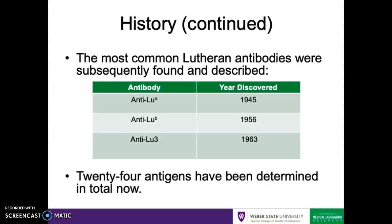Not all of the Lutheran antibodies were discovered all at once. Anti-Lutheran A was discovered in 1945, but it took a couple of years before they discovered anti-Lutheran B, which was evidence for the A antigen's antithetical partner. After this, they learned about the Lutheran A and B negative phenotype, and these individuals would occasionally make an anti-Lutheran 3 antibody as well, discovered in 1963. Subsequently, they also discovered about 22 other antigens associated with the Lutheran system altogether.